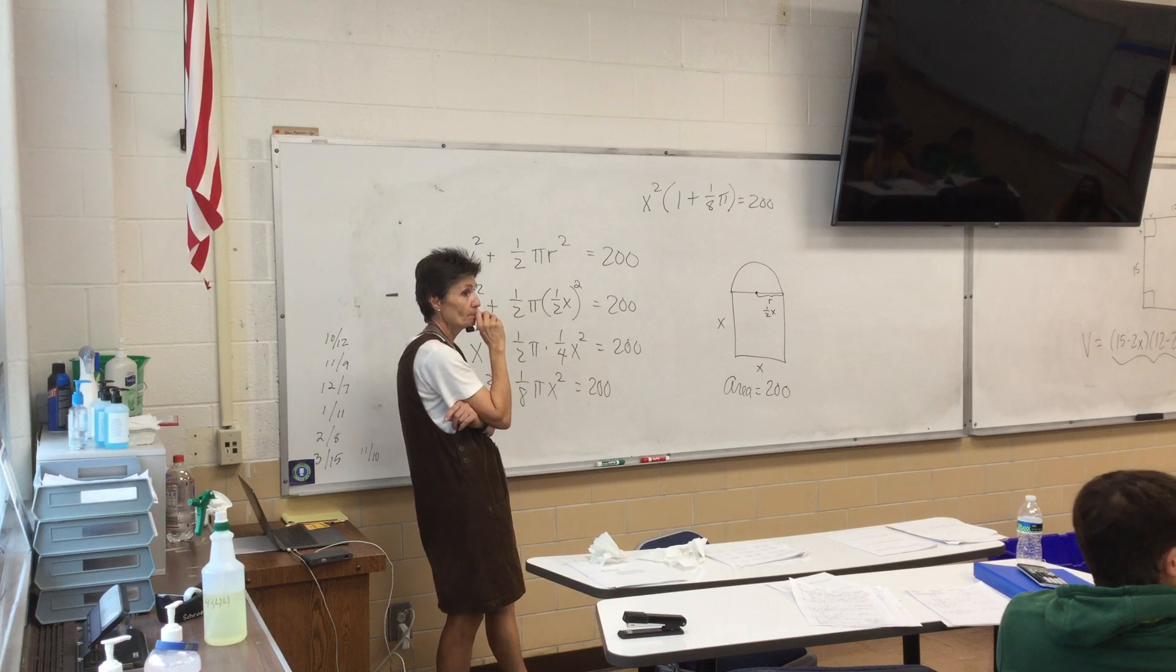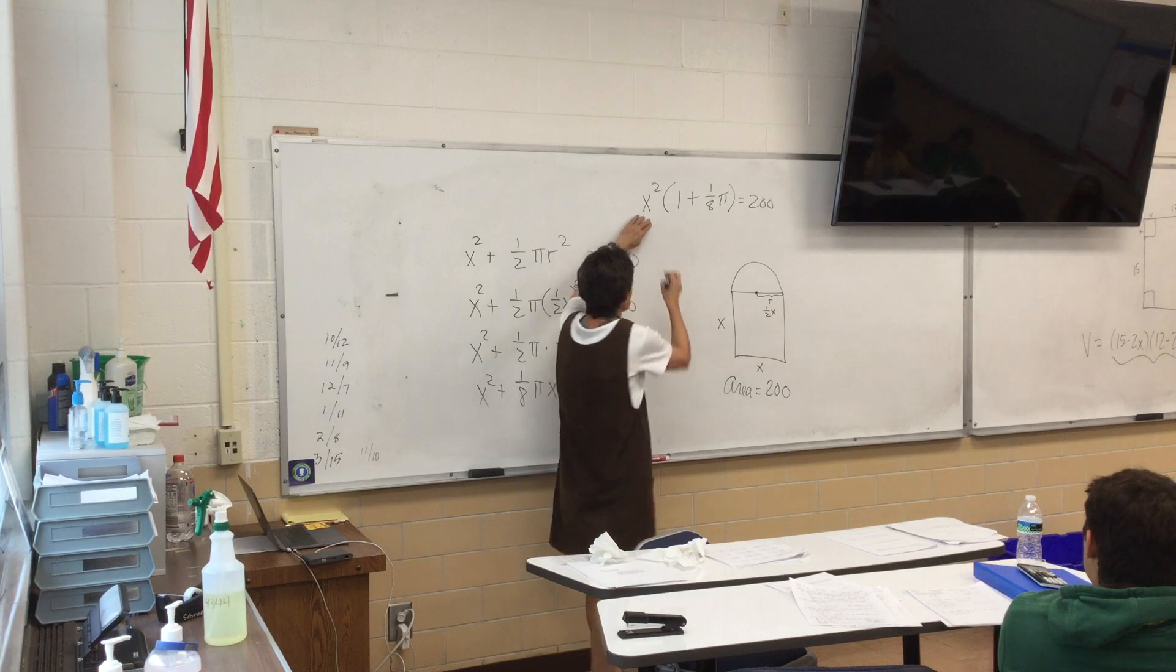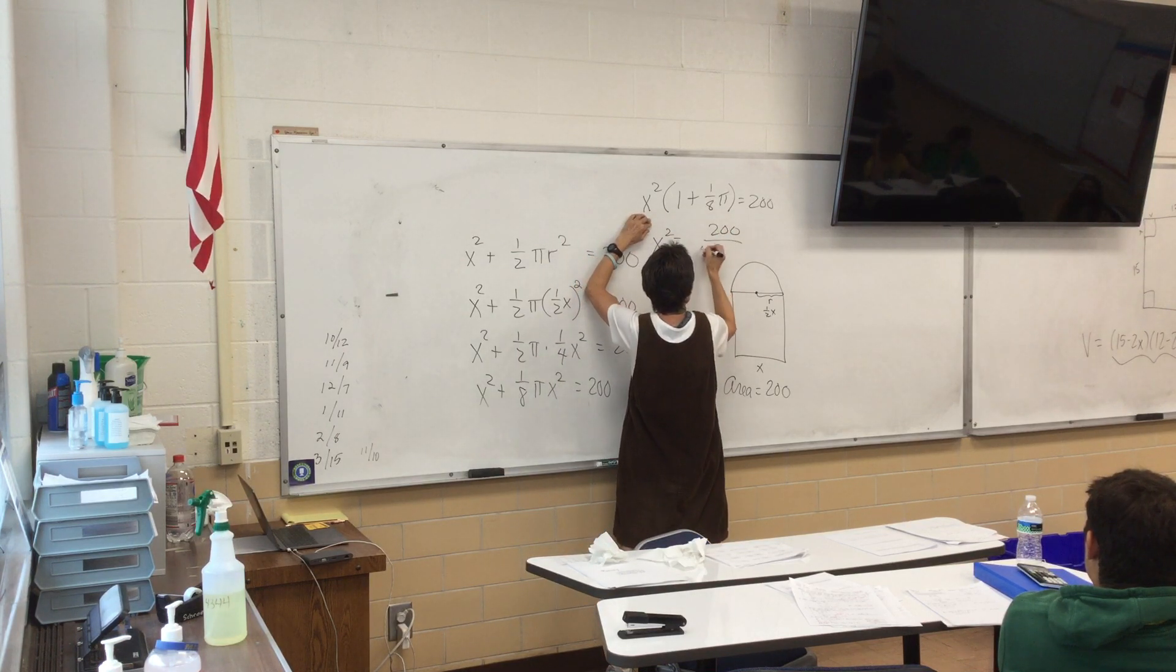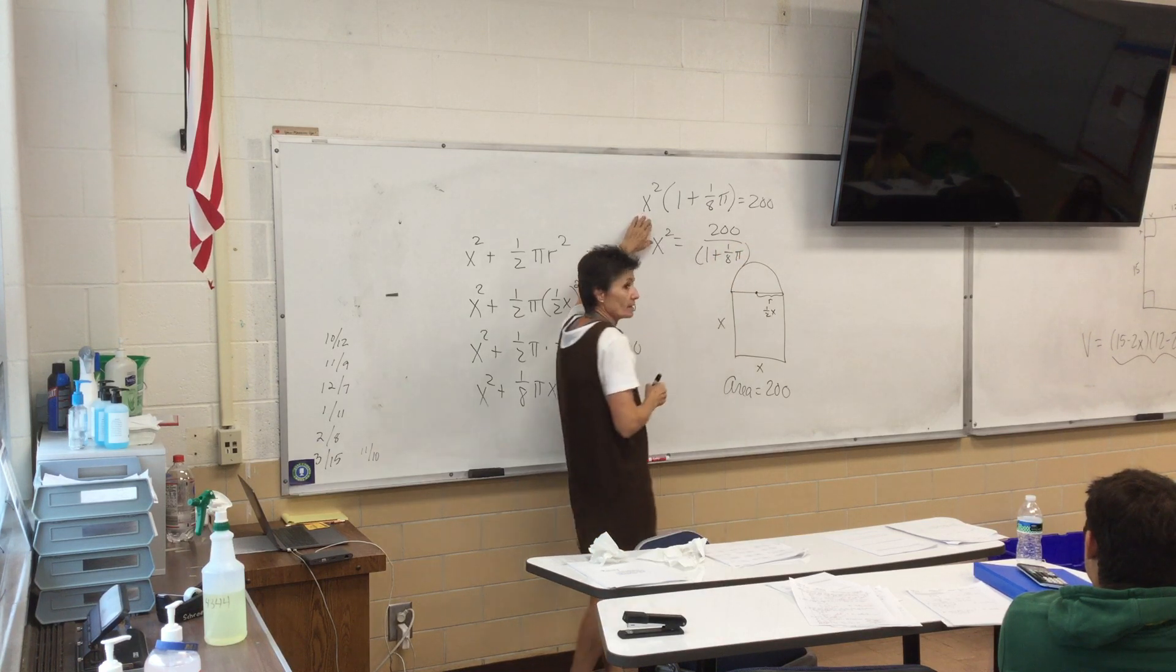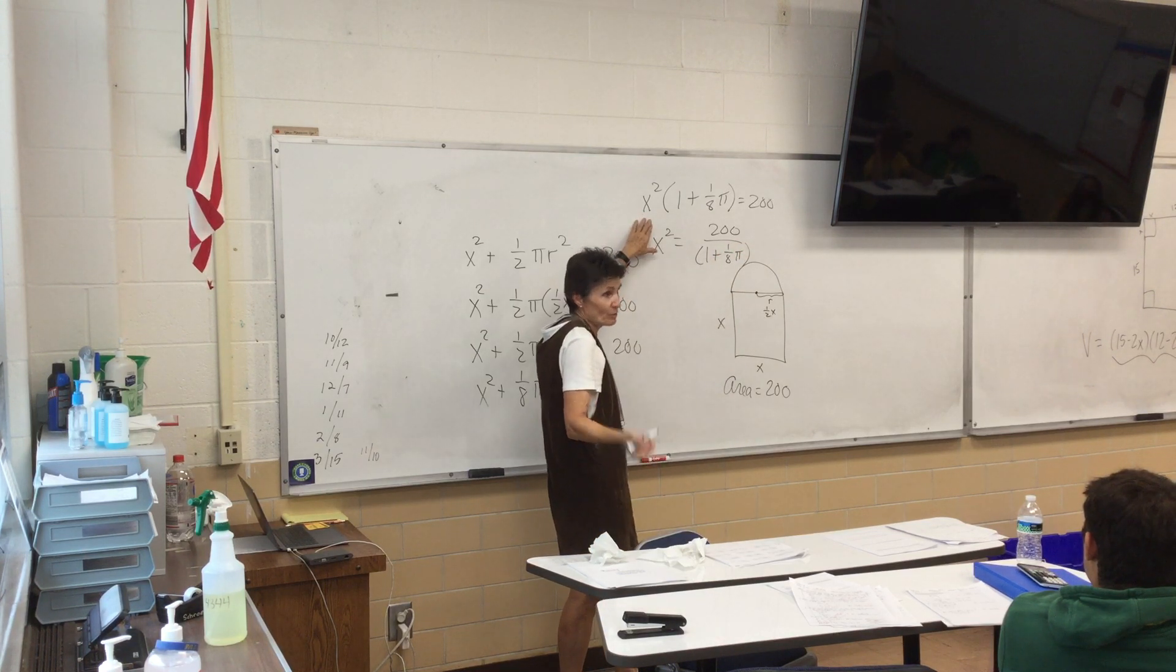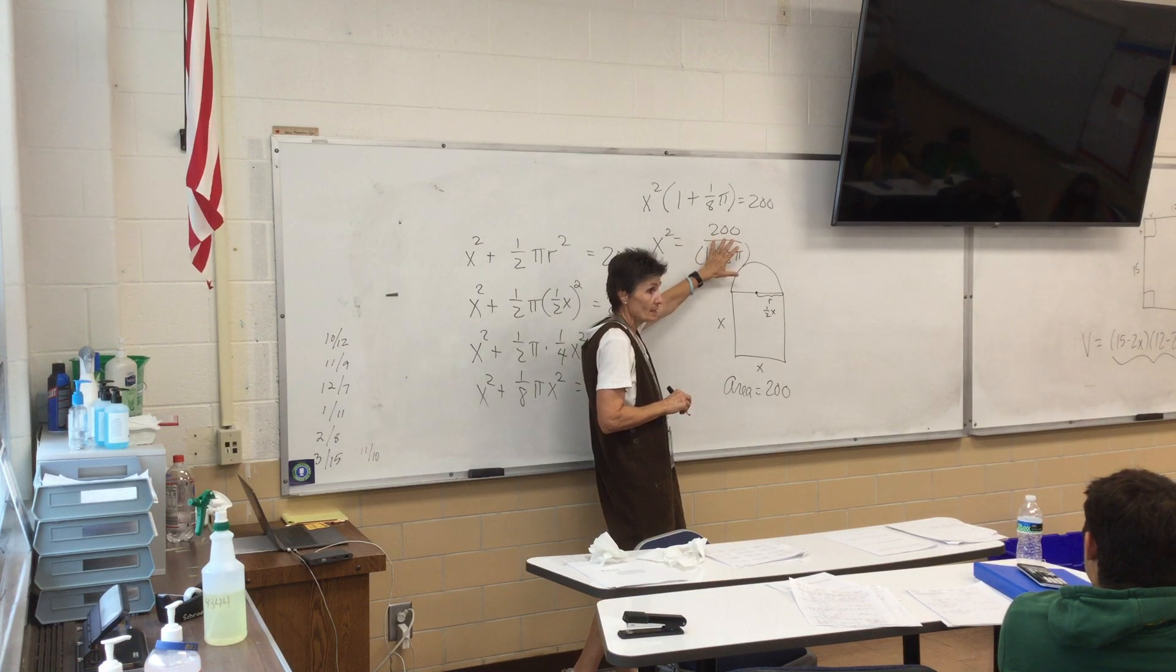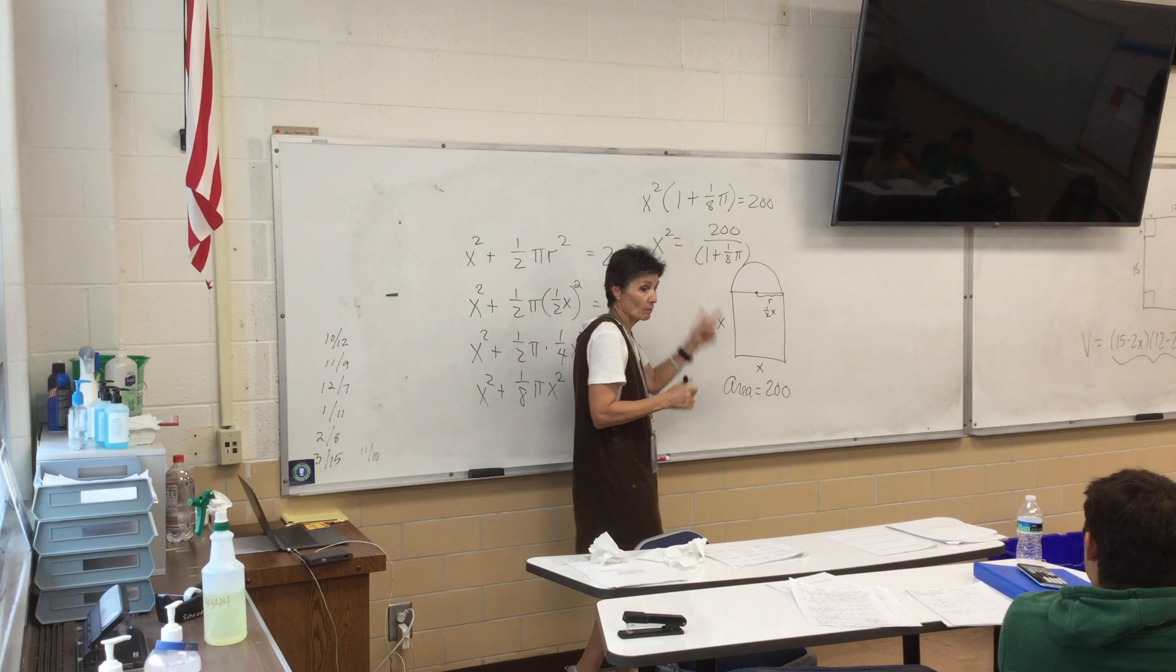You still with me? Now remember I'm solving for x, so I'm going to go ahead and divide by that parenthesis. Now I know that's really ugly, but remember we've got a calculator. So I'm going to type this in on my calculator, and then I'm going to take the square root of it. And that will be my answer.